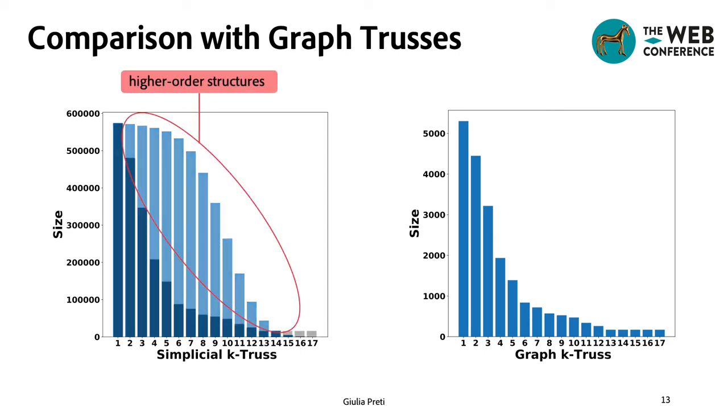The additional elements in the simplicial trusses are the higher-order structures that exist in the complex. These structures are lost when adopting the graph model, but give rise to fine-grained trusses if taken into consideration, which, in turn, allow more detailed analysis of the data.